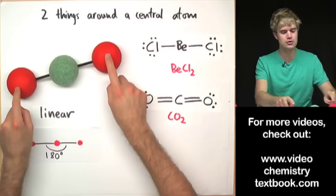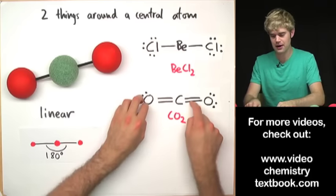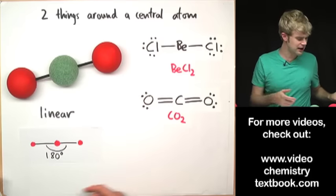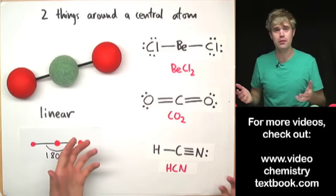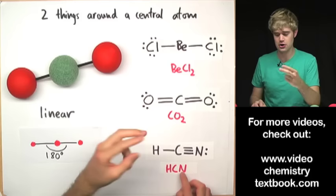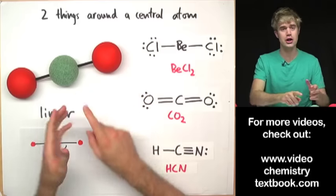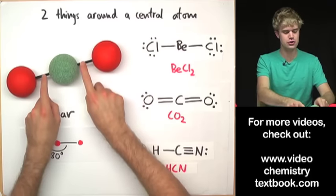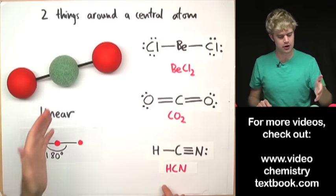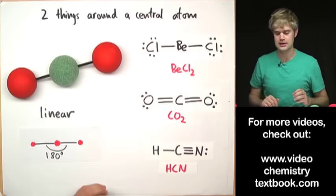For CO₂, the carbon is in the middle and the two oxygens will be 180 degrees apart. And to drive this point home — triple bonds are the same thing. In HCN, with a triple bond here and a single bond here, I consider this to be just two things around a central atom, so HCN is going to have this linear shape as well with the two bonds being 180 degrees apart. We always get a linear molecule at 180 degrees whenever we have just two things surrounding a central atom.